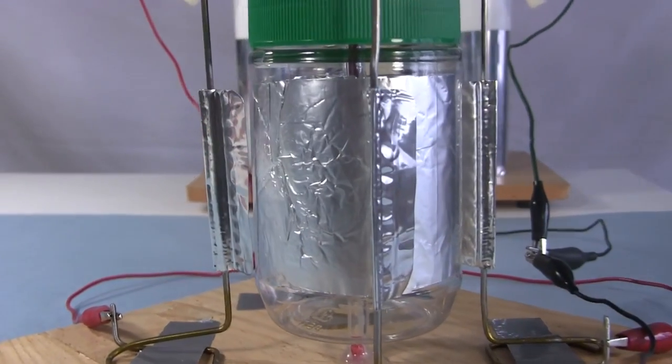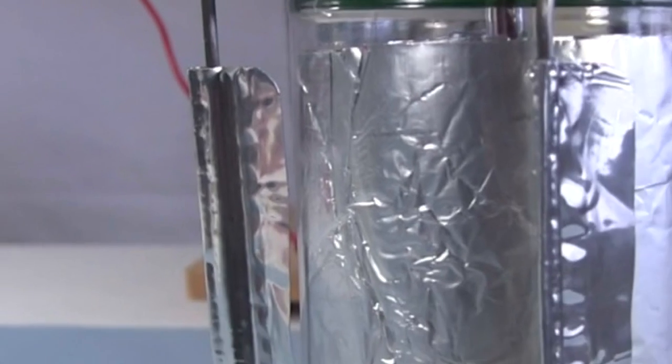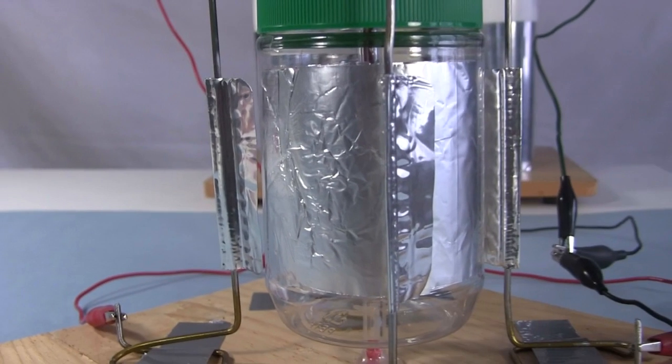Ideally the edge of the electrode should be as close as possible to the jar without touching, and the gap should be as uniform along its whole length as possible. But since we're using flimsy thin aluminum here and since the jar wobbles a bit, none of that will be ideal.